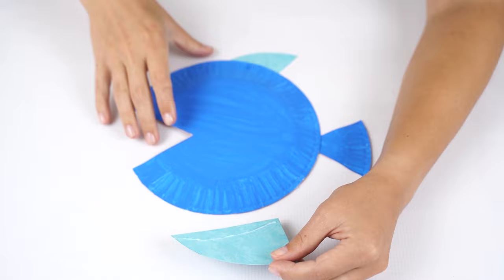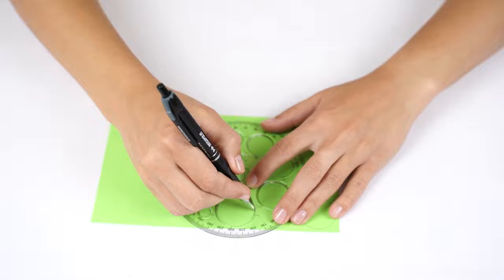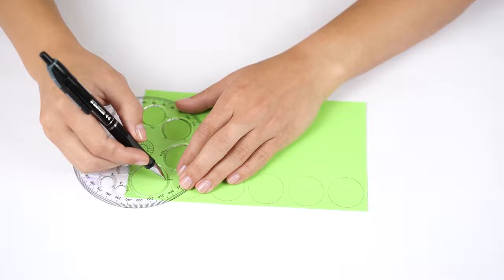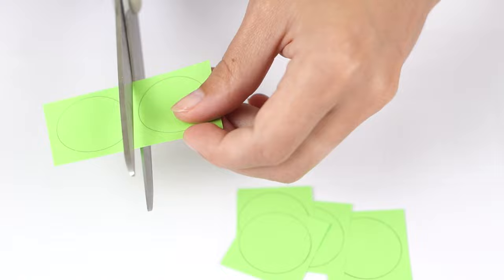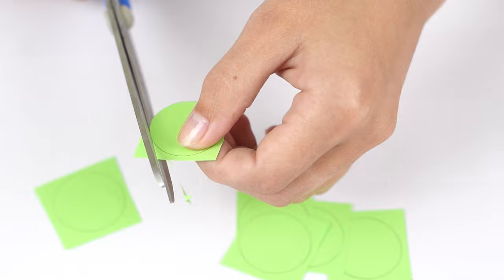Next, on green paper, draw six circles of radius 1.5cm each, optionally with a circle template, and cut them out. Next, cut out more circles in four more colors, six each.